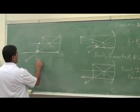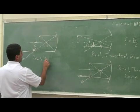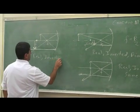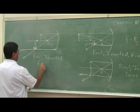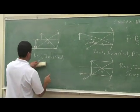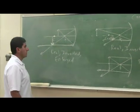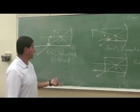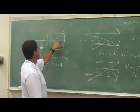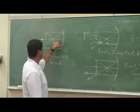So it's called real, inverted, enlarged. The next option that's left is being at the focal point and being on the other side of the focal point.